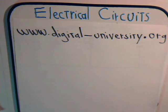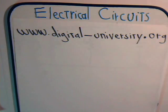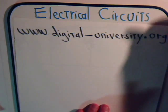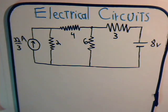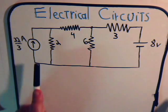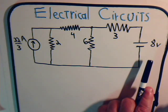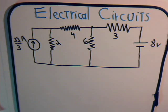This is video number 23 from digital-university.org. In this video we're going to look at a circuit that has different types of sources — a current source and a voltage source. What we're going to do is find the equivalent circuit simply by doing different manipulations on the current and the voltage source.